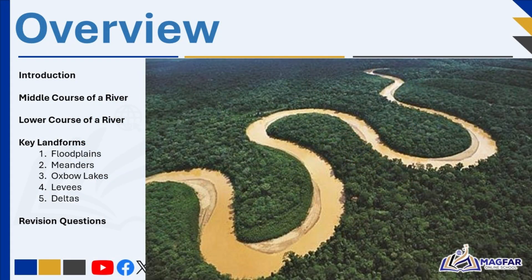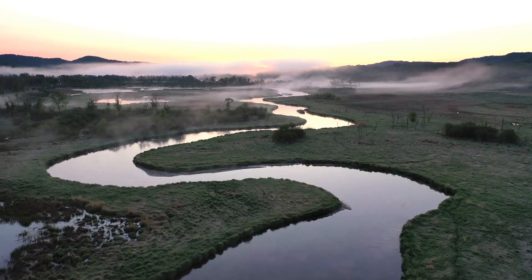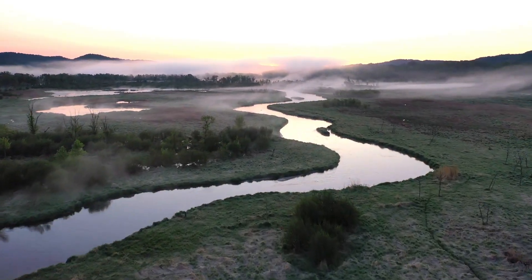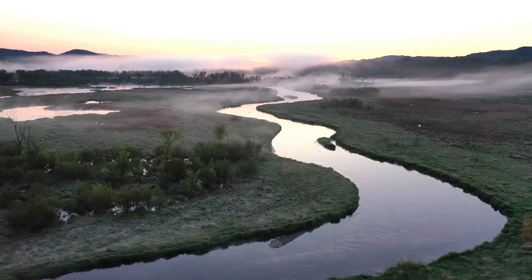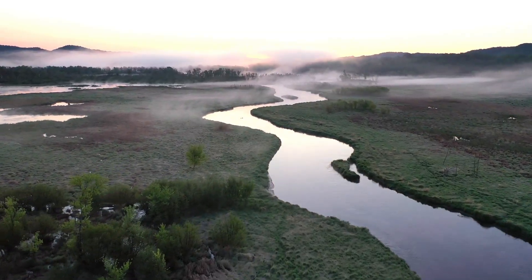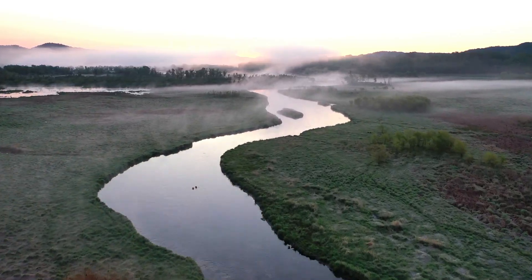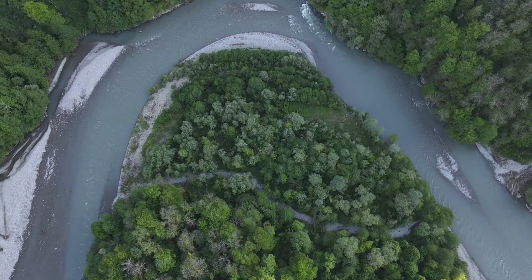In today's adventure we are following the mighty journey of a river as it flows through its middle and lower courses, where the real shaping of the land begins. From meanders and oxbow lakes to floodplains, levees, and deltas, we're uncovering how rivers carve, curve, deposit, and transform entire landscapes. By the end of this video you'll understand why rivers bend and twist, how they build new land, and what incredible landforms tell us about the power of moving water.